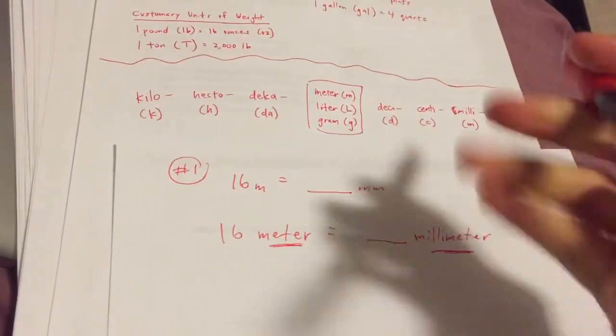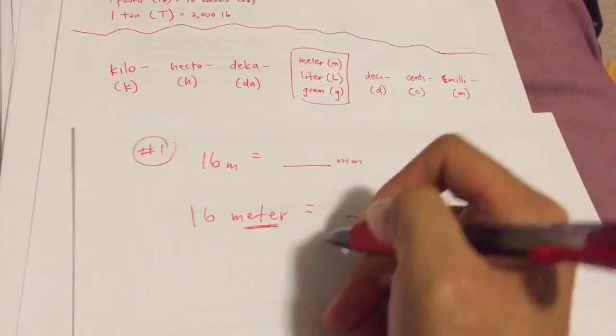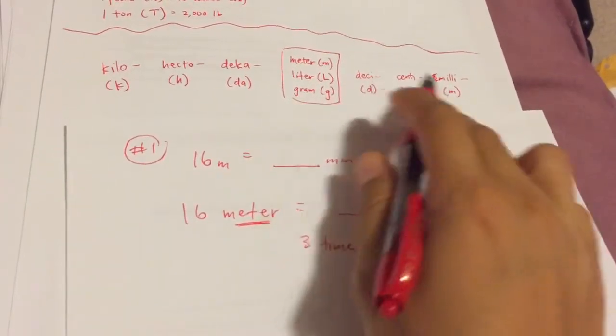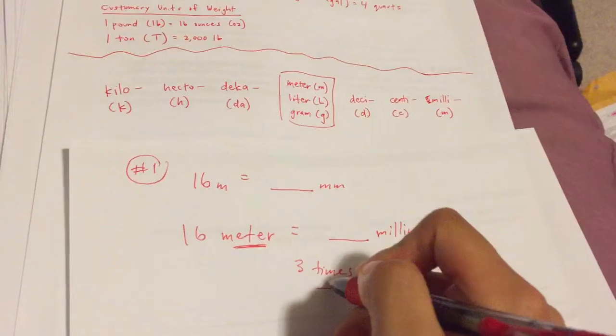You're going three times. And are we going from meter to millimeter going right, or going left? We're going this way, which is right.